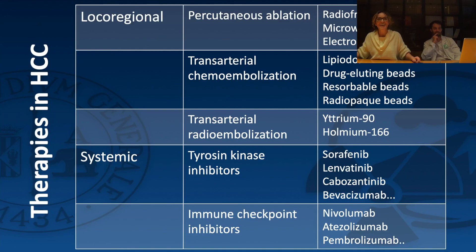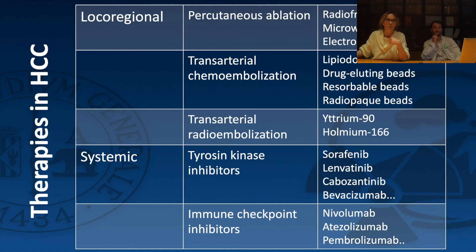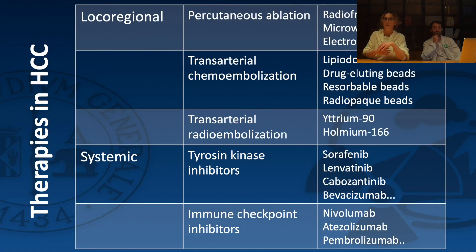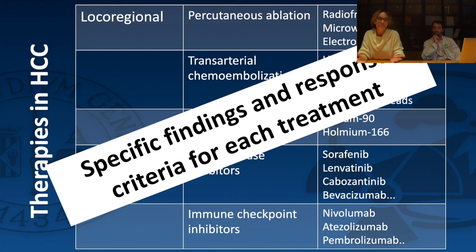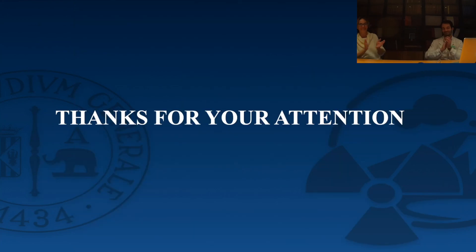In summary, for any HCC patient — and indeed for any tumor — the radiologist must know what type of treatment the patient has undergone: immunotherapy, tyrosine kinase inhibitors, a combination, or local-regional therapy such as radioembolization, drug-eluting bead TACE, microwave ablation, or radiofrequency ablation. Each therapy produces different imaging findings. Specific response criteria apply per treatment type. Future directions include liquid biopsy, functional PET imaging with new tracers, and interventional radiology skills for biopsy — all pointing toward personalized medicine.